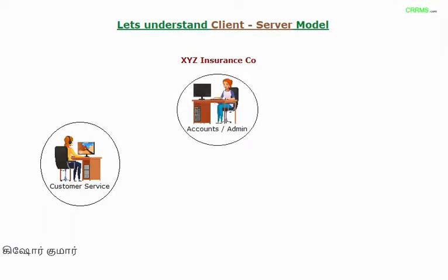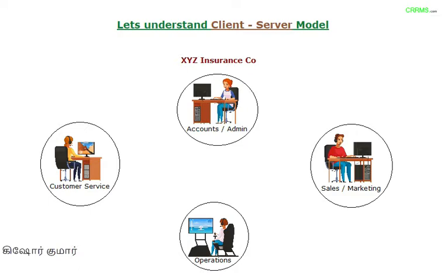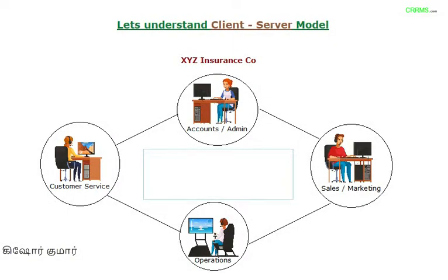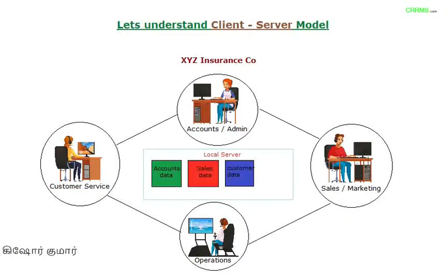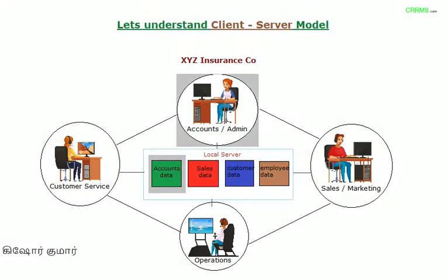XYZ Insurance Company has a small office with a LAN setup containing four departments: customer service, accounts and admin, sales and marketing, and operations or HR. All these departments need to act together to service customers. In a client-server model on this local area network, one local server holds all the data — customer data accessed by customer service, accounts data by admin, sales data by the sales team, and employee data by HR.